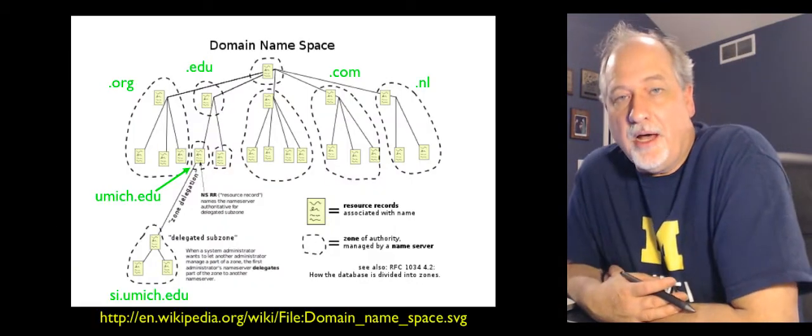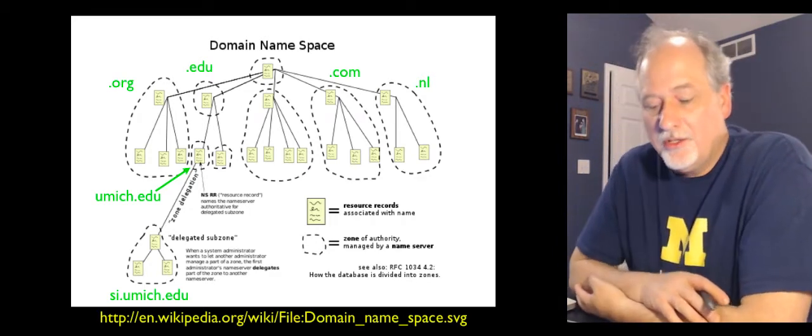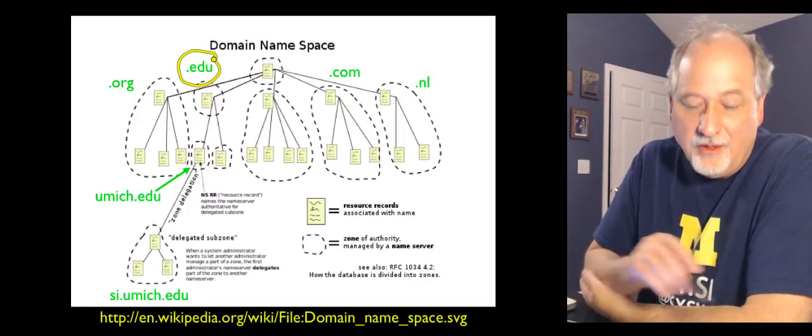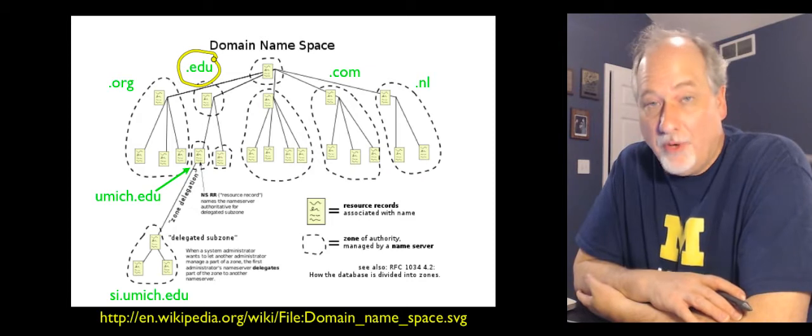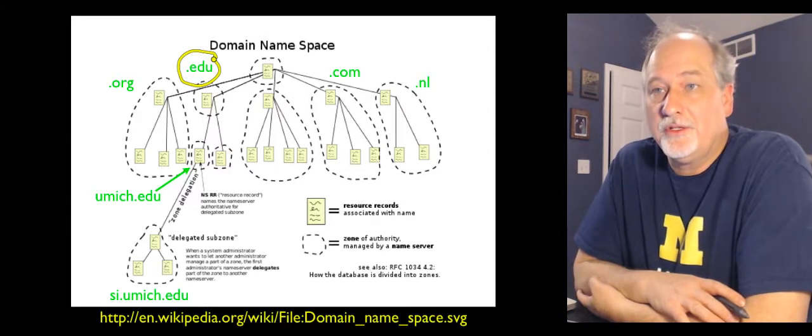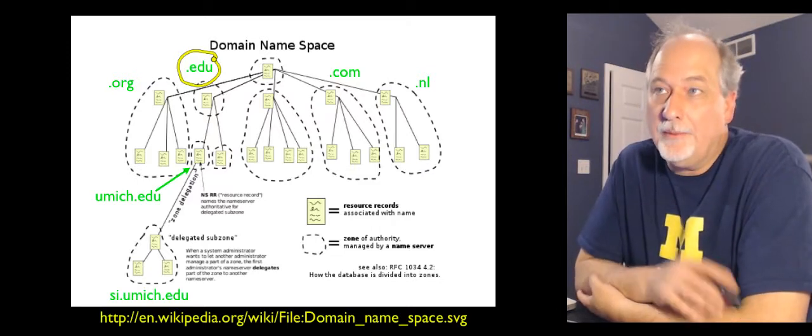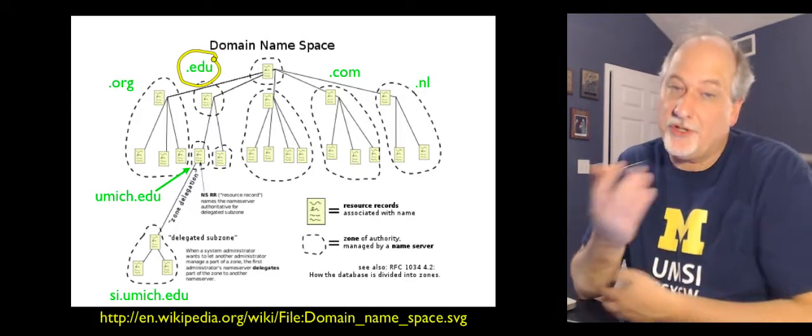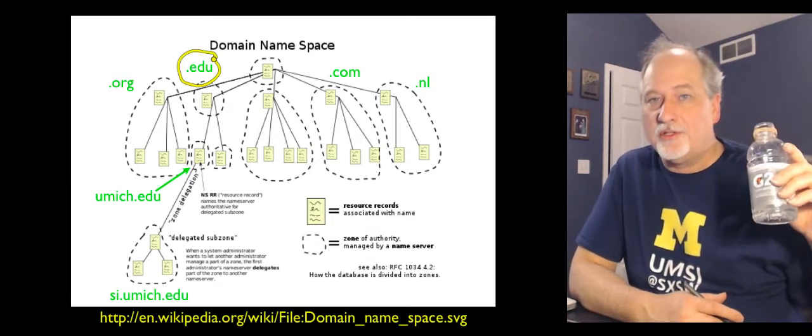The other thing that's interesting about domain names is that they're owned from right to left. There's a hierarchy. Basically an organization owns edu. The organization's name is Educause. It has conferences and other things, but one of the things it does is own, in the public trust, the name edu. So University of Michigan could go to edu and say, hey, could I have umich.edu? And they would think about it and maybe give it. They did because University of Michigan was an accredited institution of higher education.